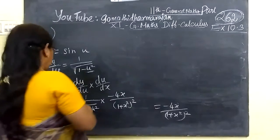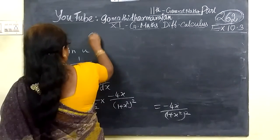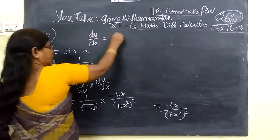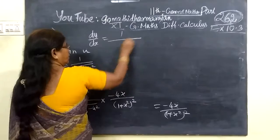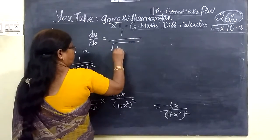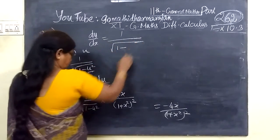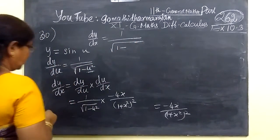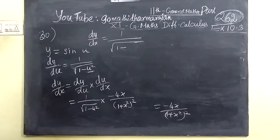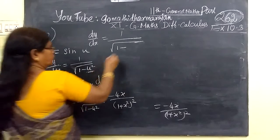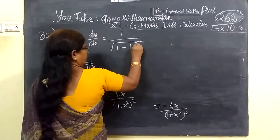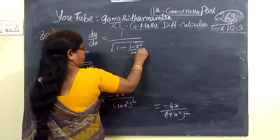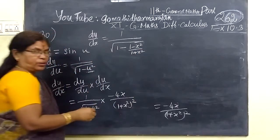So here we are writing dy by dx equal to 1 by root of 1 minus u squared, where u equals 1 minus x squared by 1 plus x squared, substituted in.